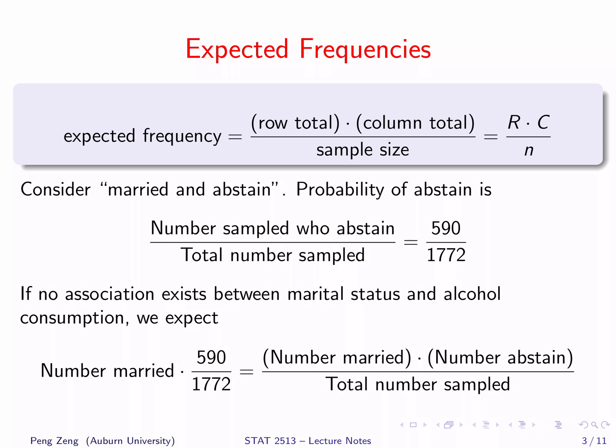It is 590 divided by 1,772. If no association exists between marital status and alcohol consumption, we can calculate the expected frequency for married and abstain using the number of married times the probability of abstain. It is exactly the product of the number of married and the number of abstain divided by the total sample size. We can see it exactly follows the formula given at the top of the slide.